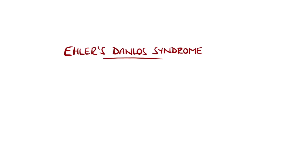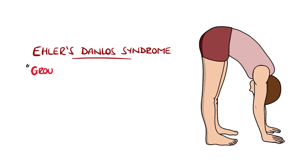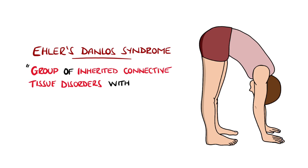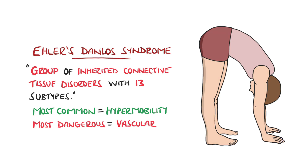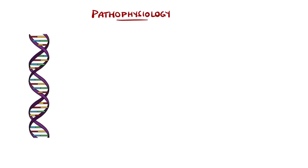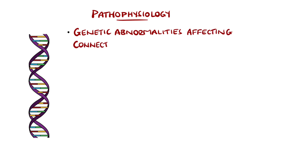Ehlers-Danlos syndrome is a group of inherited connective tissue disorders with 13 different forms or subtypes. The most common is hypermobile EDS, while the most dangerous is vascular EDS, which is associated with vessel and organ rupture. These syndromes are the result of a genetic abnormality in genes coding for connective tissue, or for molecules that interact with connective tissue.